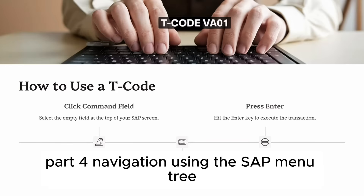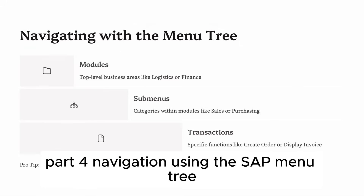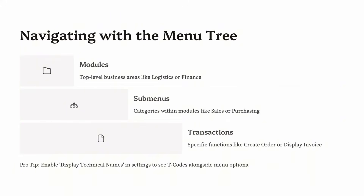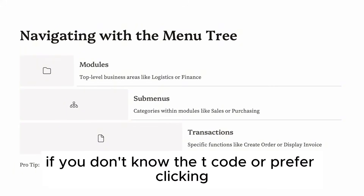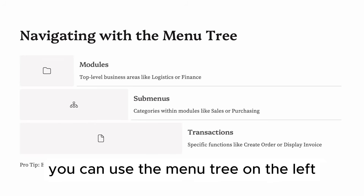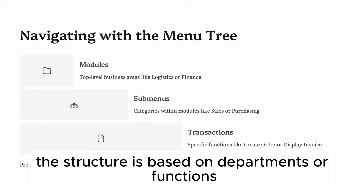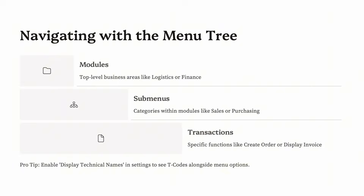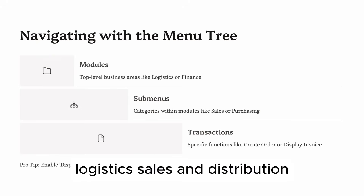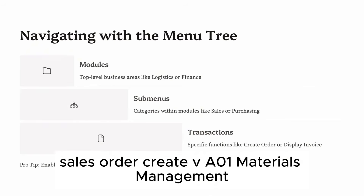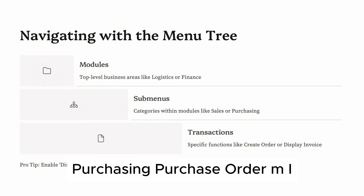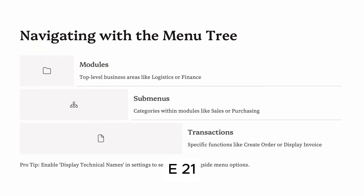Part 4: Navigation — Using the SAP menu tree. If you don't know the T-code or prefer clicking, you can use the menu tree on the left. The structure is based on departments or functions: Logistics → Sales and Distribution → Sales → Order → Create → VA01; Materials Management → Purchasing → Purchase Order → ME21N.